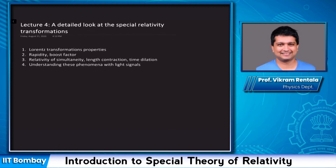We will see two fascinating aspects of Special Relativity. The first is length contraction — rods which are moving with respect to another observer appear to be shorter. The second is time dilation — clocks which are moving with respect to another observer appear to be running slower. We will then try to understand these phenomena more intuitively from the constancy of the speed of light relative to all inertial observers.